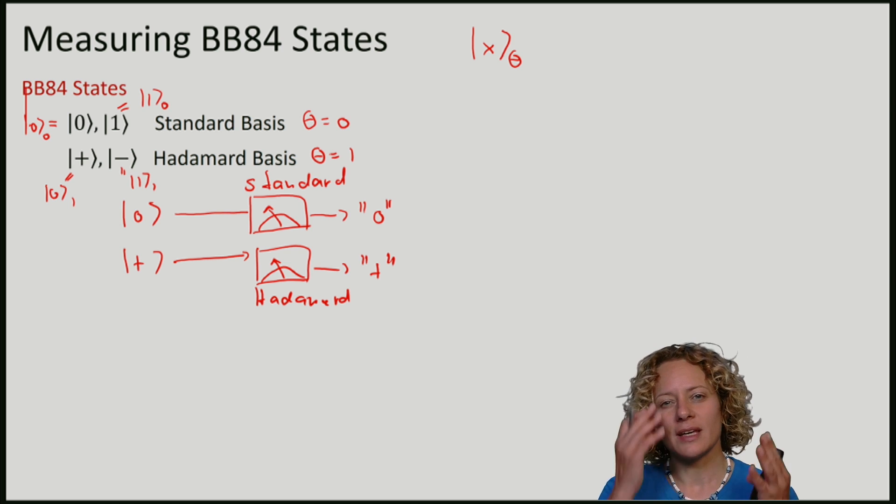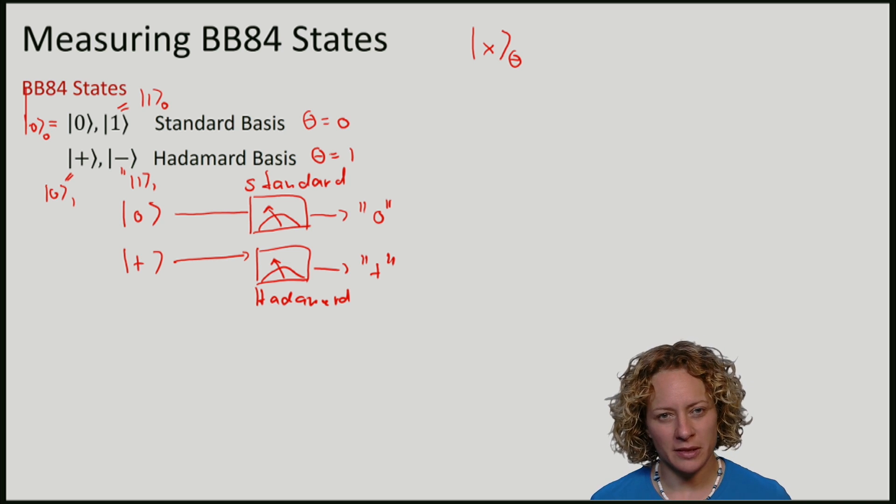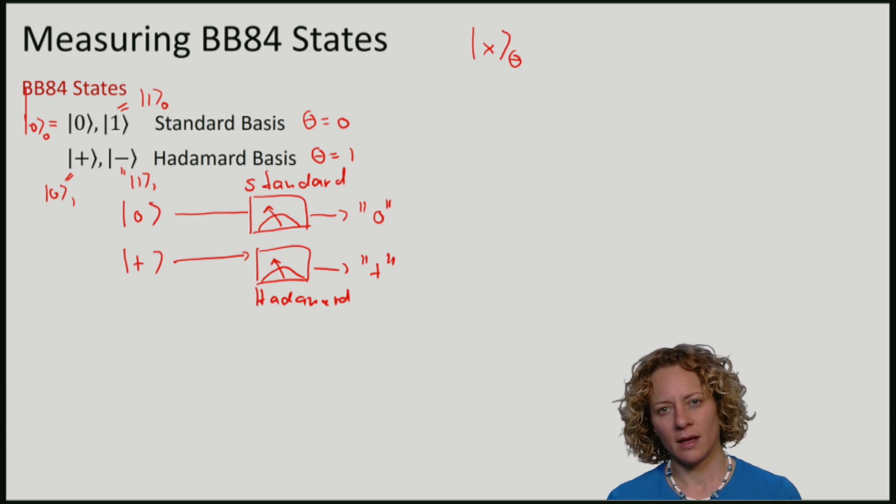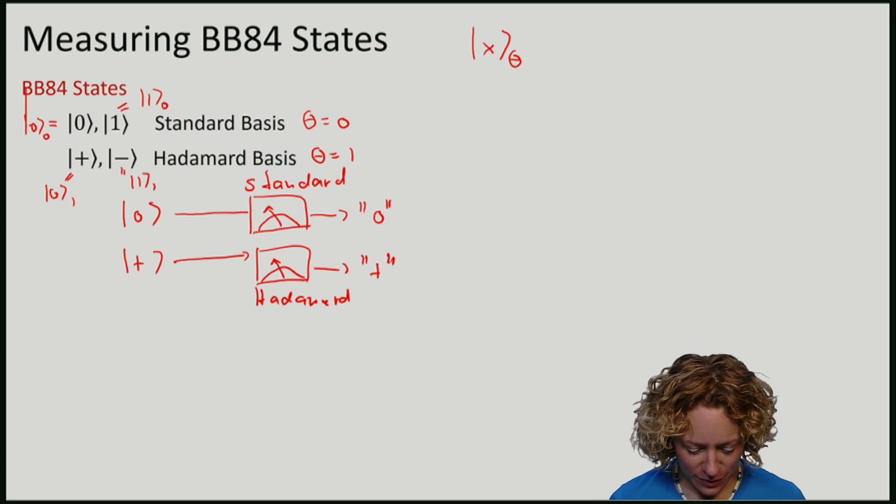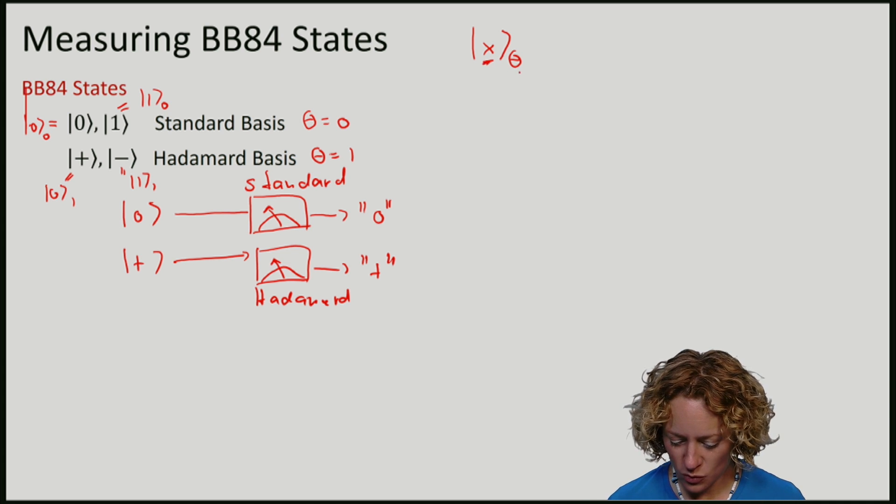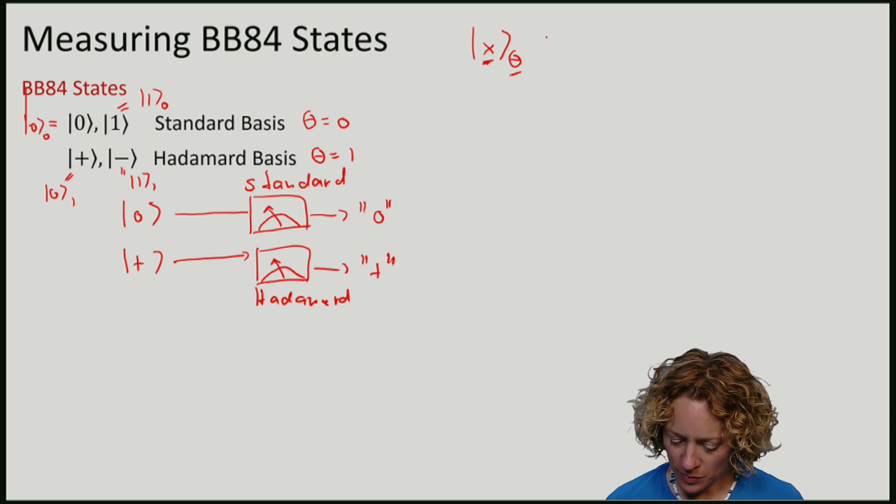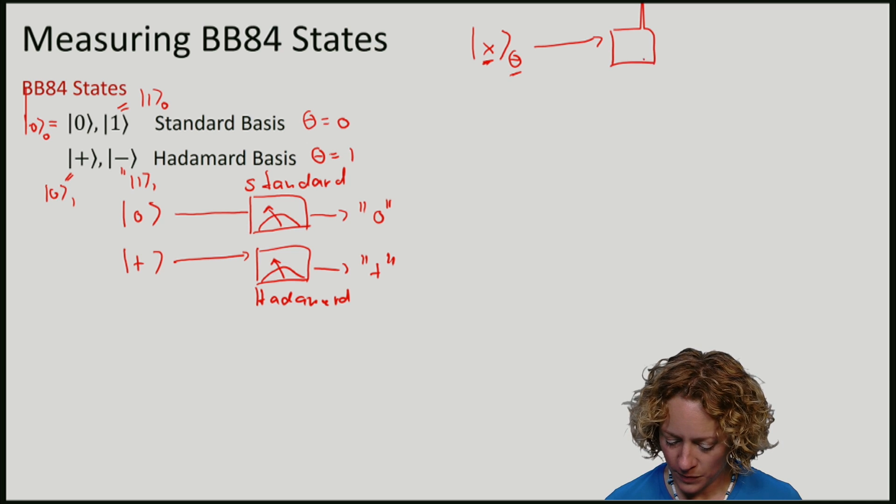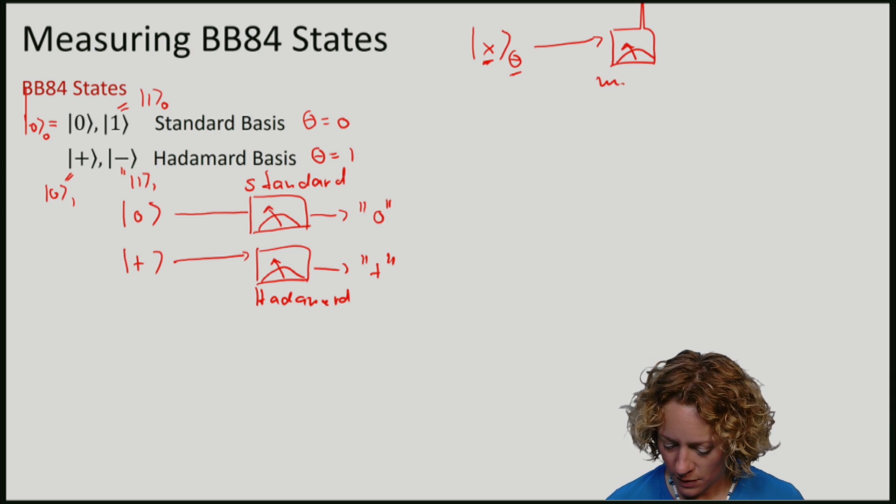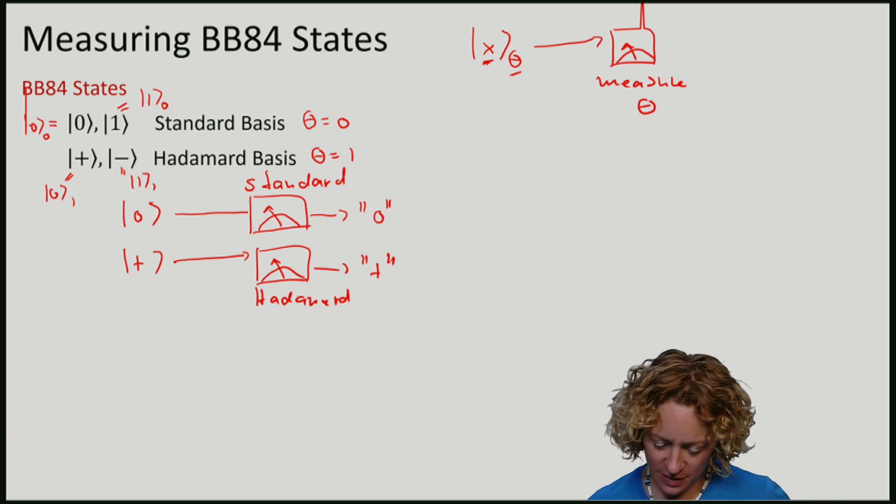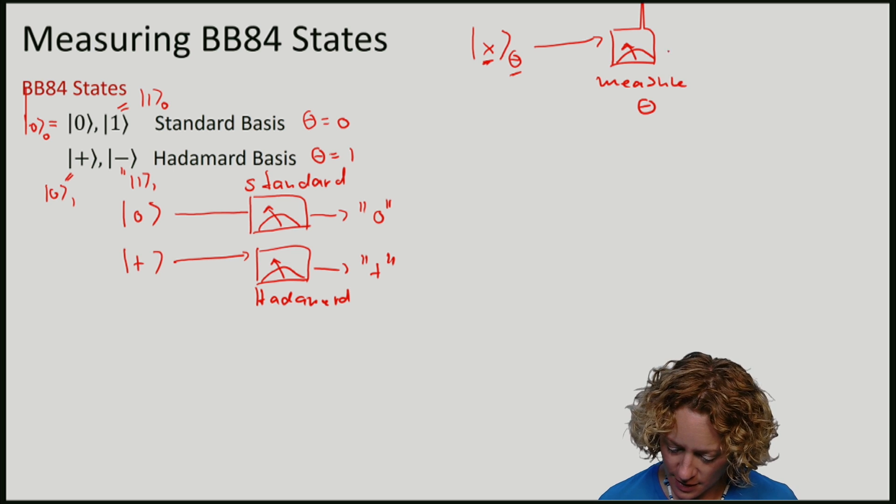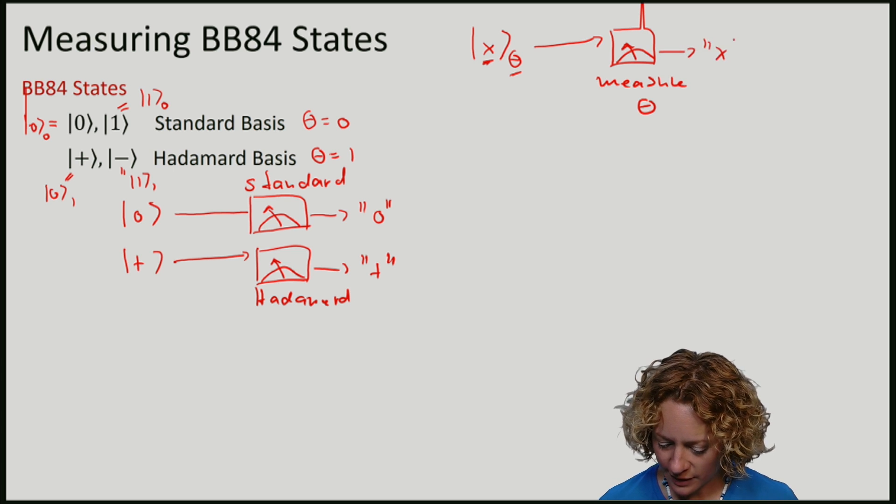Then if I encode a bit in basis theta and also measure in basis theta - meaning if I pick standard I measure standard, if I pick Hadamard I measure Hadamard - then I always recover exactly X.